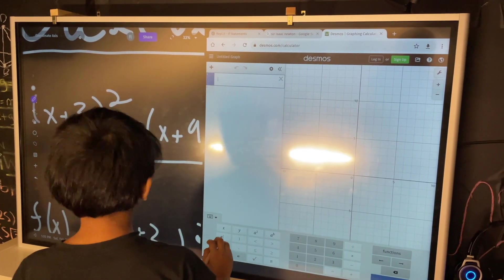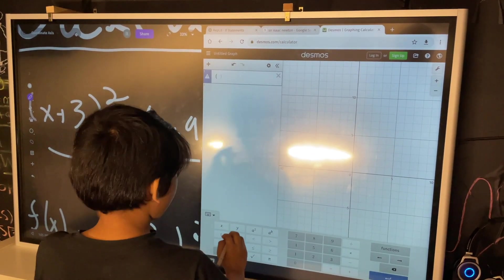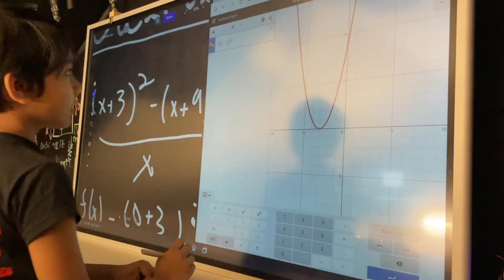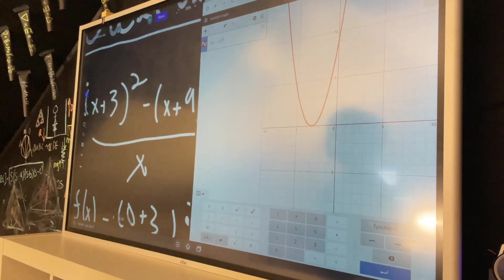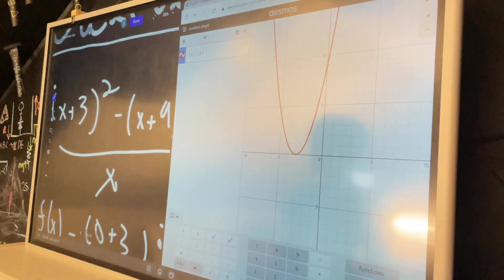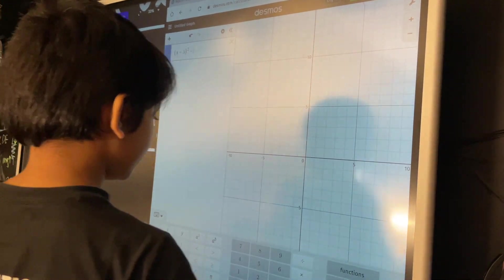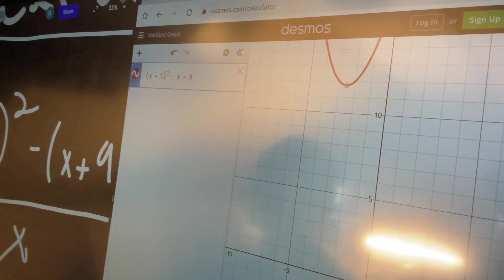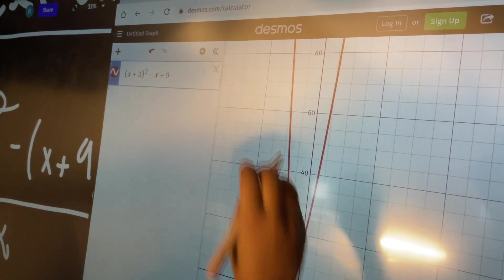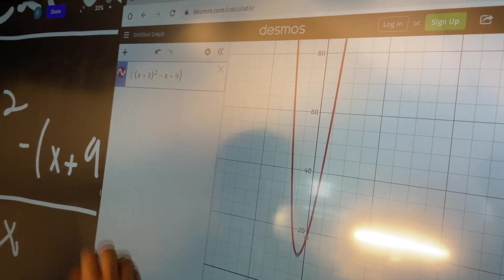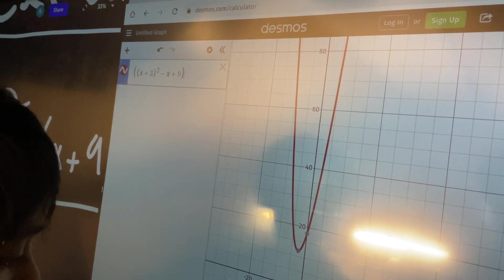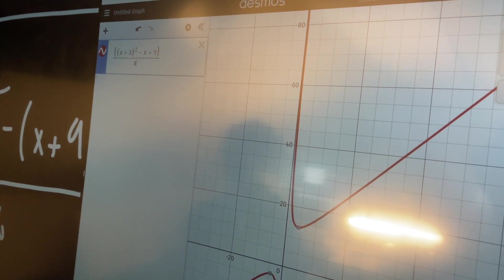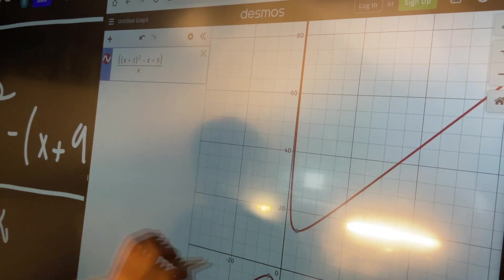So, this is going to be a tricky one to type, but x plus 3 whole squared, that's how it's going to look like. But then, you do this, minus x plus 9. Then, this is how it looks like. And, you divide all of that stuff by x. Oops, I think it doesn't recognize it that way.